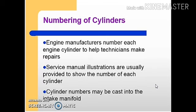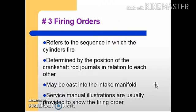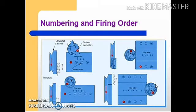Engine manufacturers number each engine cylinder to help technicians make repairs. Service manual illustrations are usually provided to show the number of each cylinder. Cylinder numbering may be cast into the intake manifold. Firing order refers to the sequence in which the cylinders fire, and may also be cast into the intake manifold. Service manual illustrations are usually provided to show the firing order. This is how numbering and firing order is done in the engine cylinder.